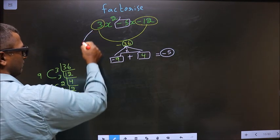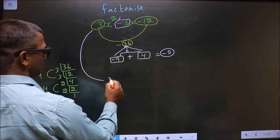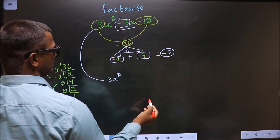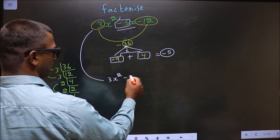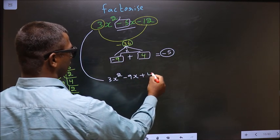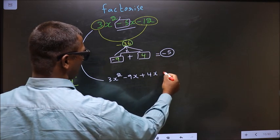Now this will change to 3x² in place of -5x. Now you should write -9x + 4x - 12.